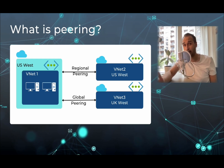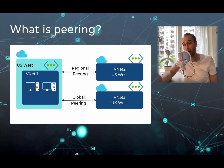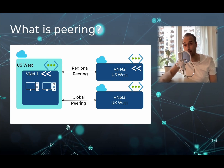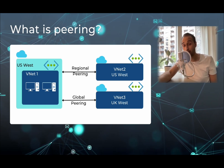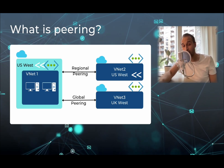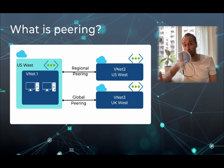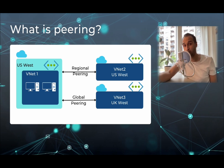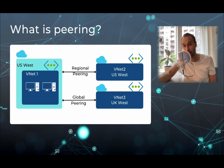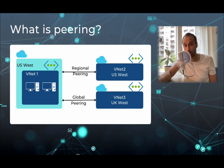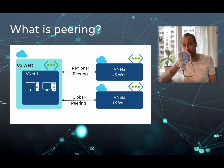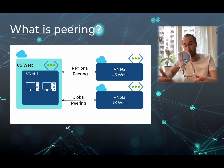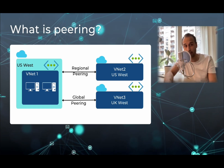We can simply go for a peering solution that will help us to bridge the connectivity between different VNets. In this specific case, we are using regional peering as both VNet one and VNet two are in the same US West region. While if we want to connect with VNet three, that is in a different UK West region, we are going to use a different type of peering, which is global peering. It's a service that helps us to create connectivity between different VNets in Azure.